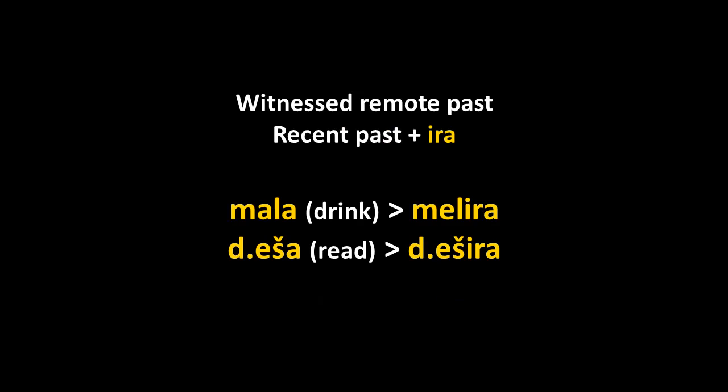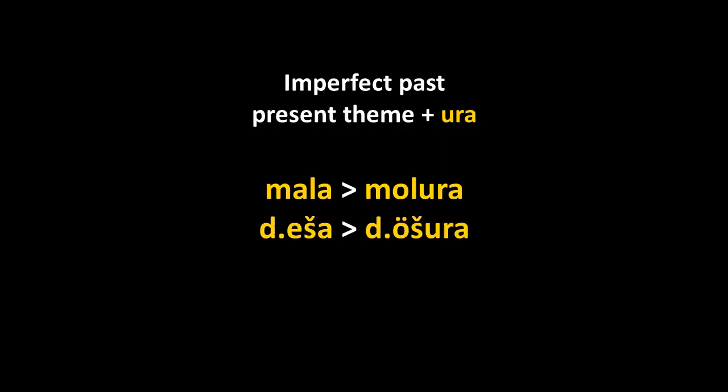The witnessed remote past is the most commonly used form of past tense in Chechen, roughly similar to the English simple past. There's also an imperfect past for actions that had a degree of progression: molan → molura (I drank every day), desha → dursura (I used to read the newspaper when I was a kid). That's the continuous/imperfect aspect of the past.